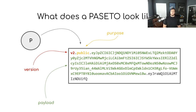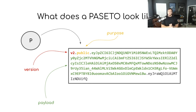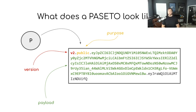The third segment of the PASETO is called the payload. This is the part most people care about. The payload is essentially just that blob of JSON data that's been encoded and potentially encrypted as well as cryptographically signed. It's just an encoded form of the JSON data you're trying to securely transmit over the internet.